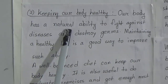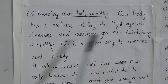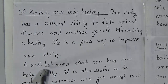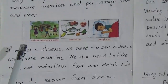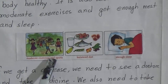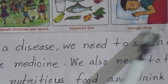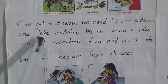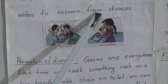The next point is keeping our body healthy. Our body has a natural ability to fight against disease and destroy germs. Maintaining a healthy lifestyle is a good way to improve such ability. A well-balanced diet can keep our body healthy. It is also useful to do moderate exercise and get enough rest and sleep. If we get a disease, we need to see a doctor and take medicine. We also need to rest, eat nutritious food, and drink safe water to recover.